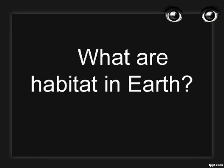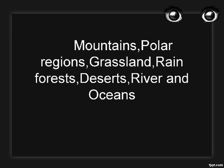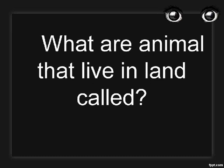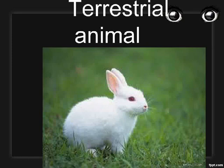What are habitats on earth? Mountains, polar regions, grassland, rainforests, deserts, river, and oceans. What are animals that live on land called? Terrestrial animals.